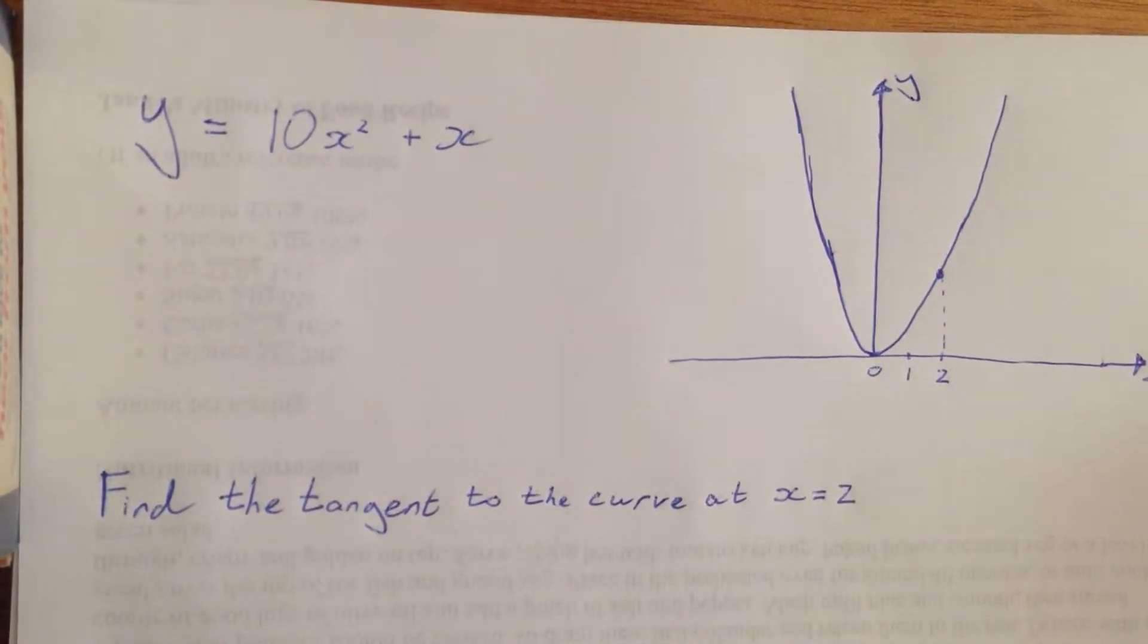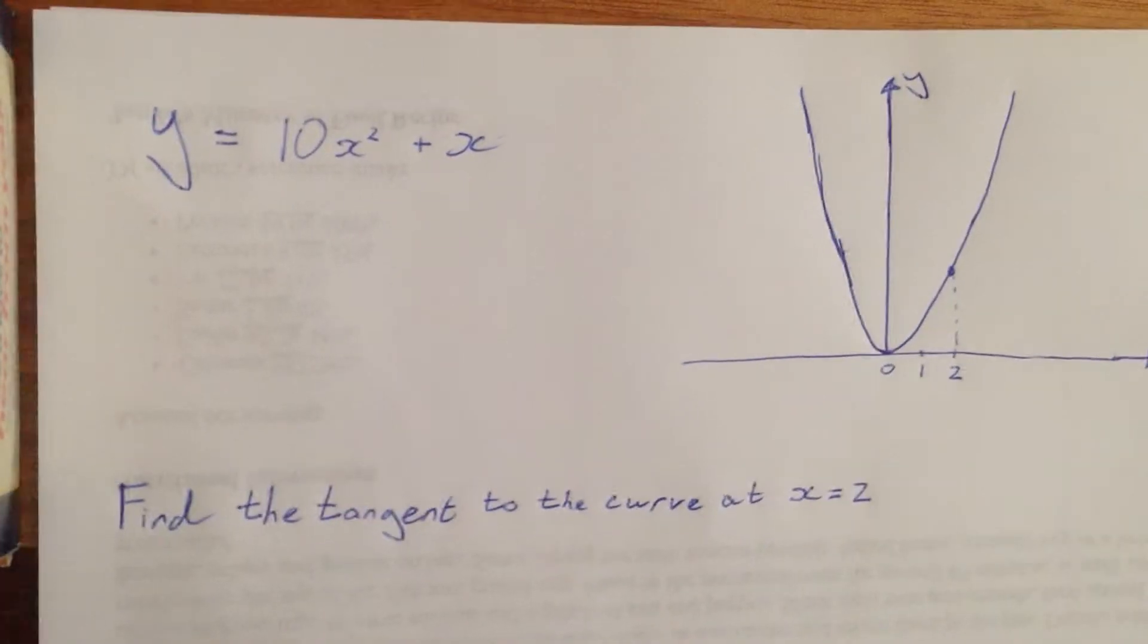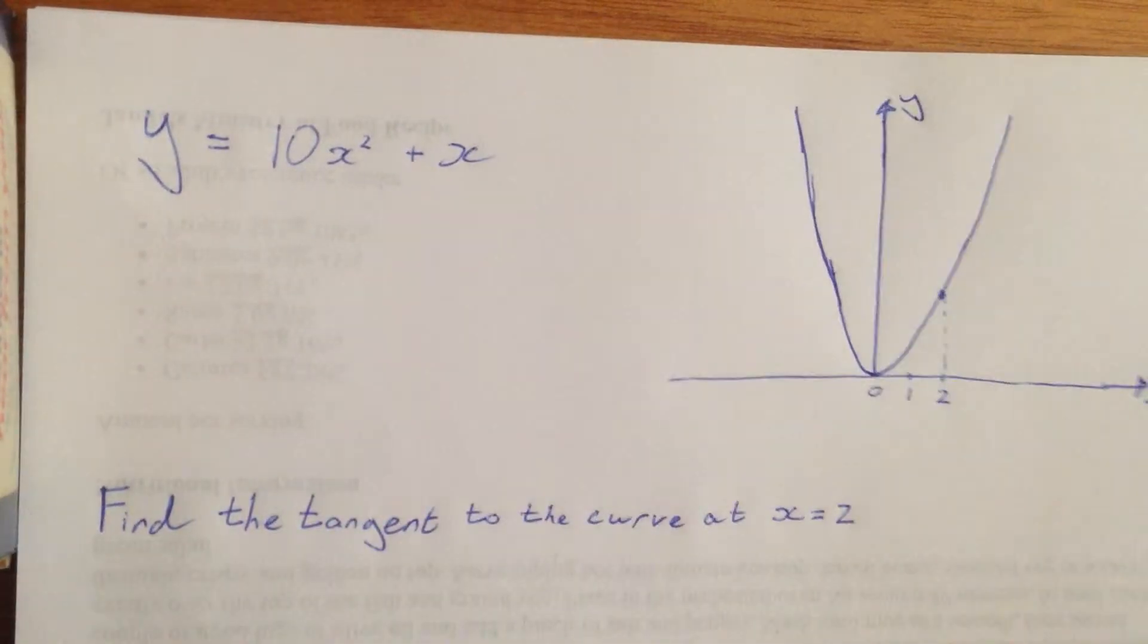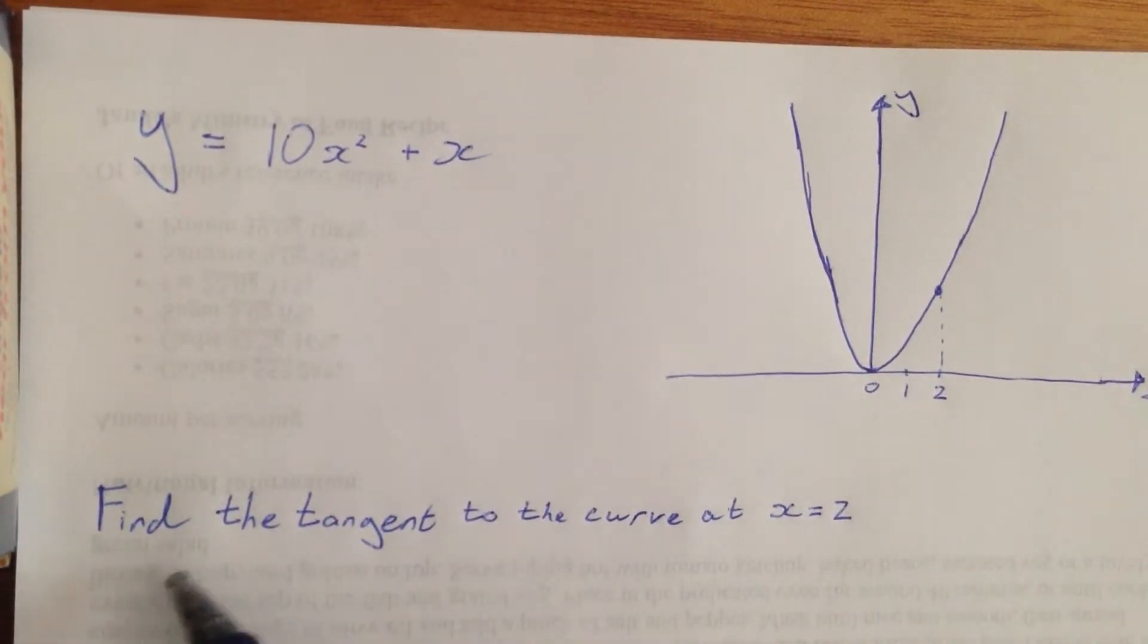Alright, so let's get started on that little exercise about tangents. We have a curve y equals 10x squared plus x, and the question is find the tangent to the curve at x equals 2.